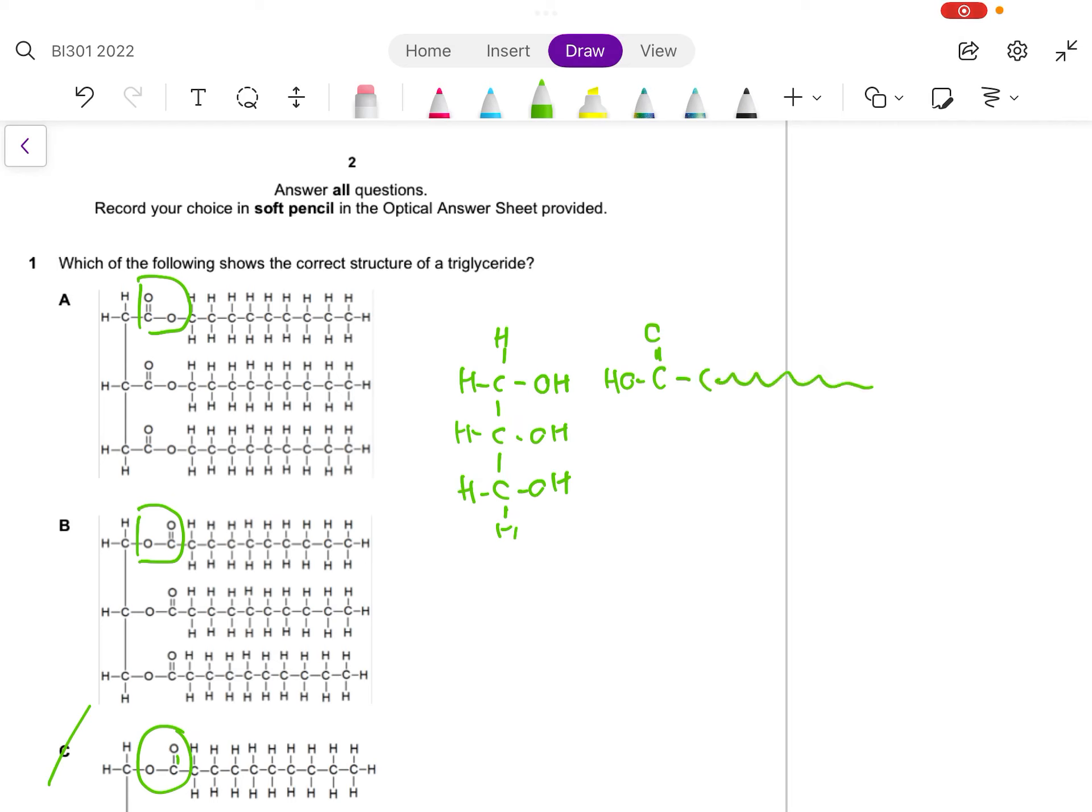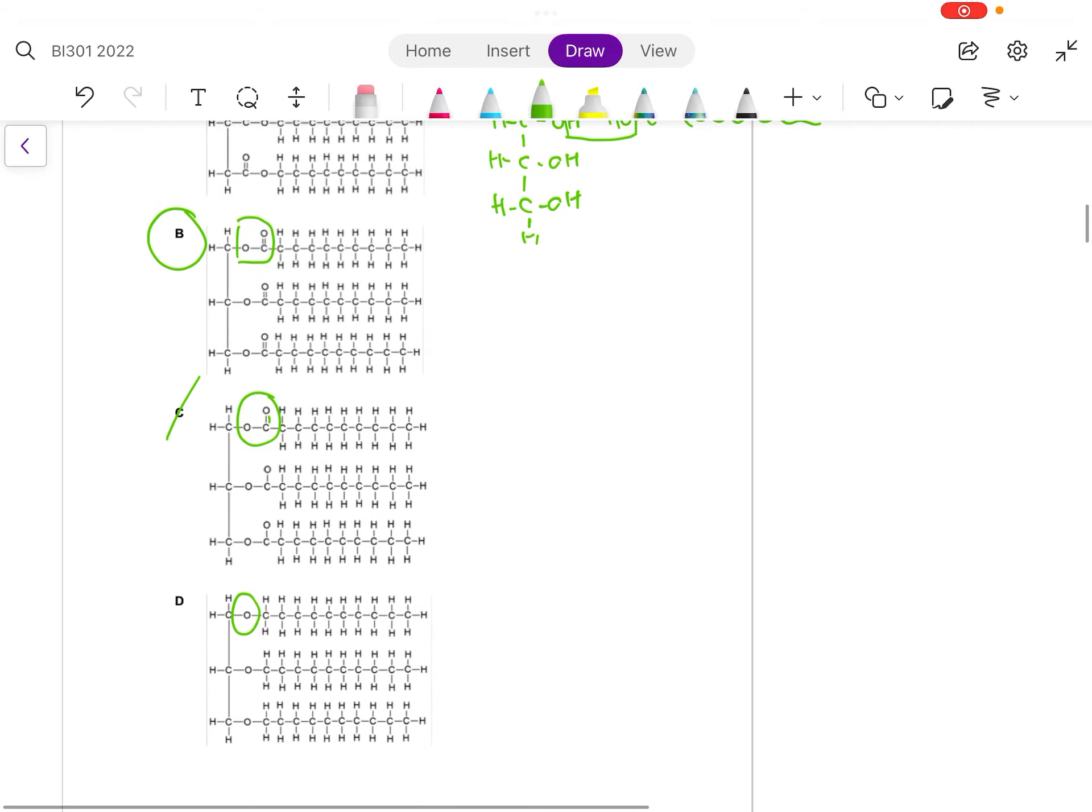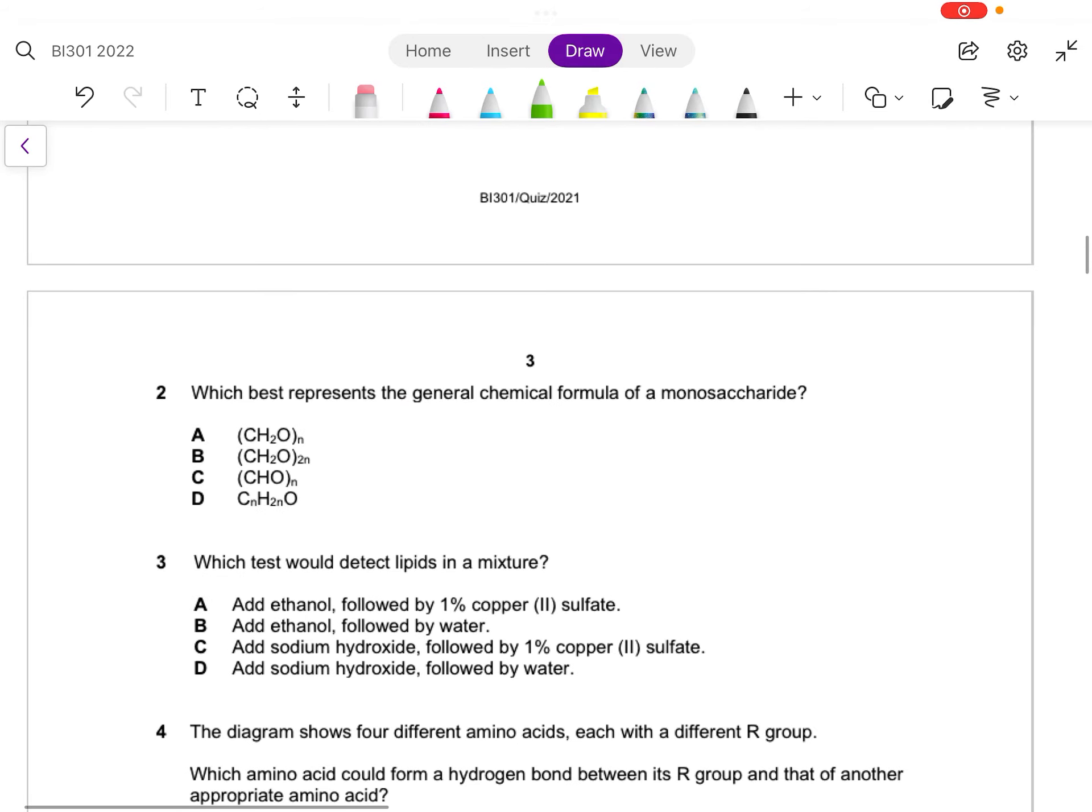So when it gives up water, the hydrogen comes from the alcohol and the OH comes from the acid. And that's why the orientation of what you have left will go something like that. So the answer is B.